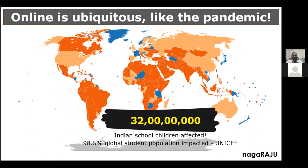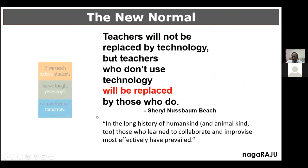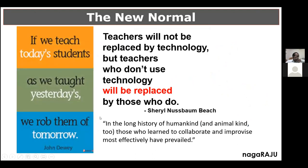Almost every child in the entire world has been affected because of the pandemic — not only in India but the whole world. Maybe about 100 percent of the student population has been affected, and regular classes have not been possible for several months. So we need to think of something that suited the situation, and one of the alternatives available to us was virtual learning.